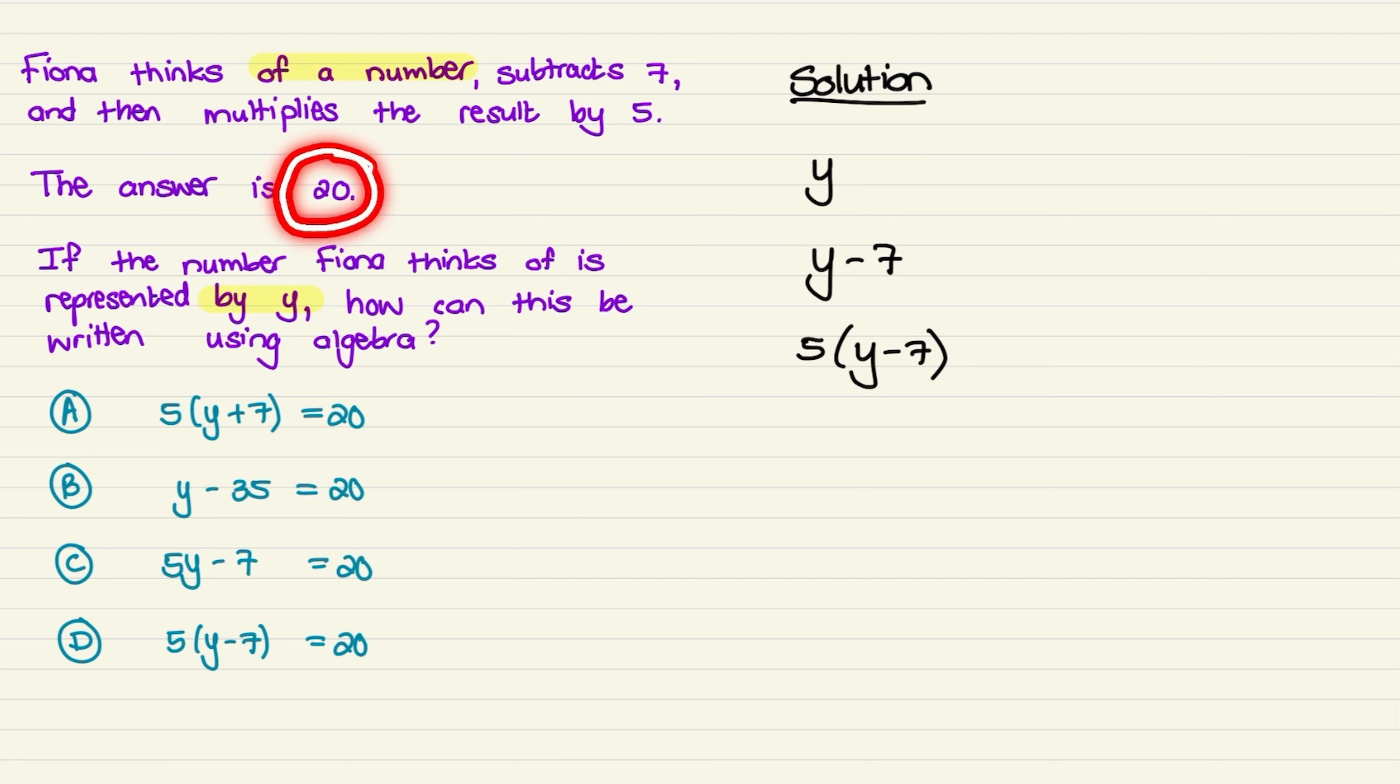Then we know that the answer is 20. So 5 times y minus 7 is 20. So out of our 4 options, option D is the correct answer.